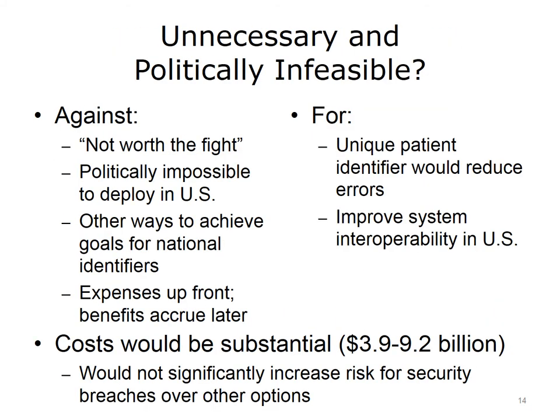Others have argued that a national health identifier is unnecessary in the United States — because it's politically infeasible, it's just not worth the fight. There may be other ways to achieve the goal, such as record linkage. But others have argued back, saying that a unique patient identifier would reduce errors and improve system interoperability in the United States. The cost of such a system would not be cheap, but would be offset by other improvements in healthcare. These individuals also argue that the risk of security breaches would not significantly increase, as most security breaches tend to involve computer media that are lost or broken into.